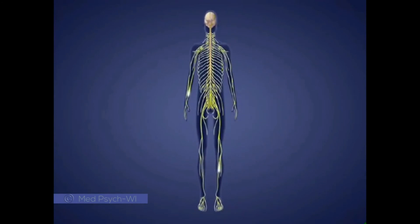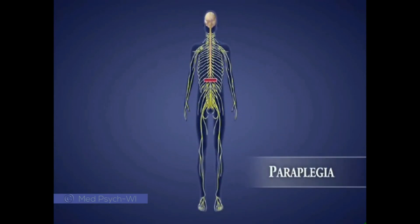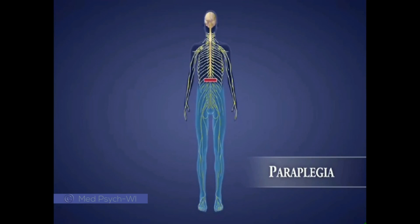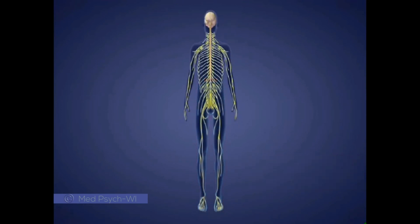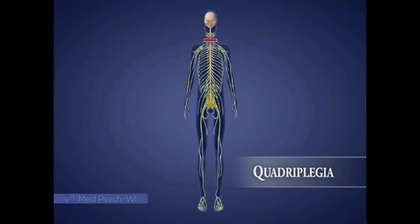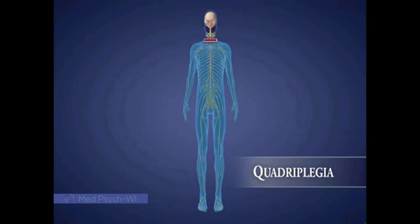Injuries to the spinal cord are also divided into two groups: paraplegia and quadriplegia. Paraplegia refers to the paralysis of the lower limbs and lower trunk, resulting from thoracic or lumbar injuries. Quadriplegia refers to paralysis of both upper and lower limbs, resulting from cervical injuries.